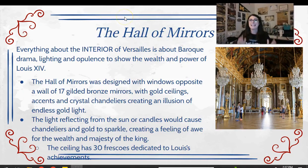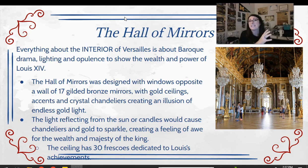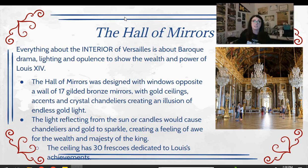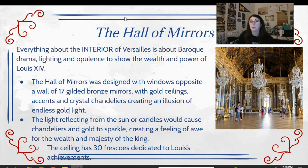Nothing says Baroque better than the Hall of Mirrors. When you walk in, on one side there are 17 gold-gilded mirrors originally made of bronze, and directly across from them are windows that bring in incredible light. The light reflects off the mirrors creating an endless illusion of light. You have gold accents, gold statues, and crystal chandeliers that catch the light — at nighttime lit up with candlelight. On the ceiling are beautiful Baroque frescoes divided by fake architecture showing scenes from the life of Louis XIV and other French kings.